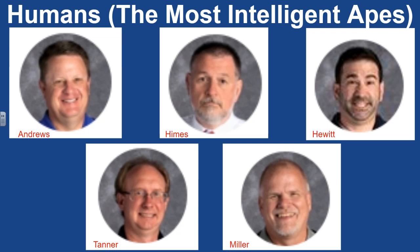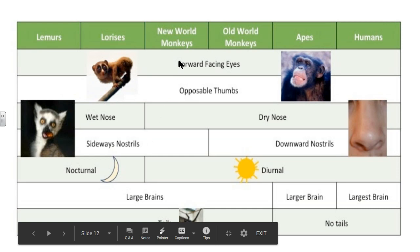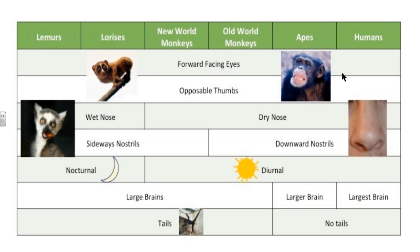Looking at this chart, we can see the lemurs and the lorises have wet noses and sideways nostrils. These are mostly nocturnal. The lemurs, the lorises, the new world monkeys, and old world monkeys all have tails, whereas the apes and humans have no tails.